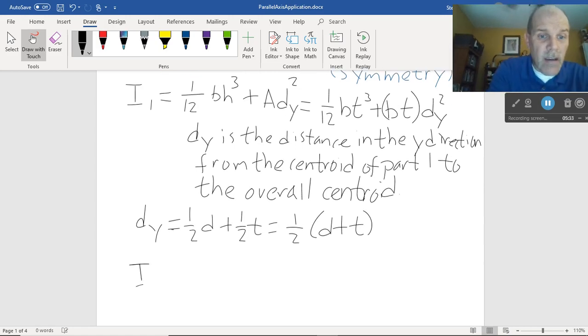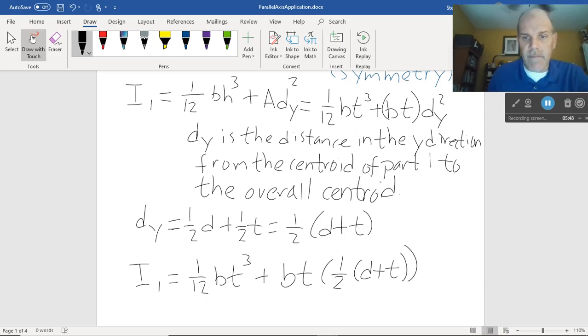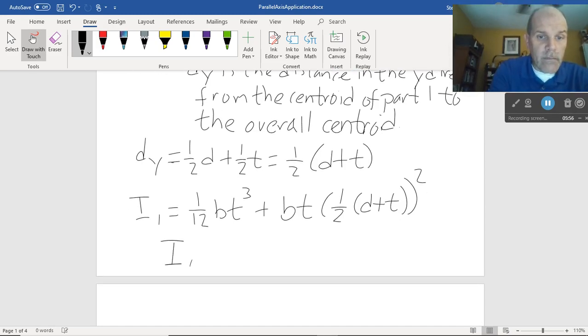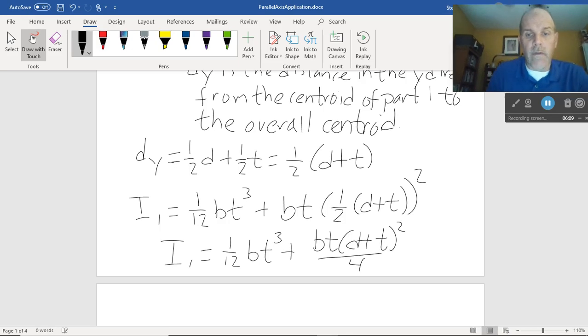And now I've got the whole thing. I1 is equal to 1/12 bt³ plus bt times 1/2 of d plus t, in this case. And I've got to square that. So, I1 is equal to 1/12 bt³ plus bt(d+t)²/4.